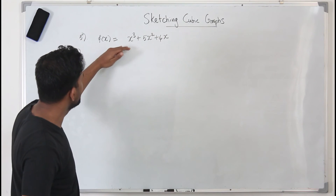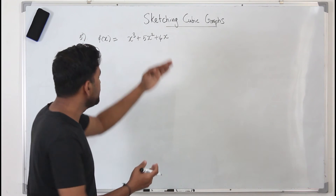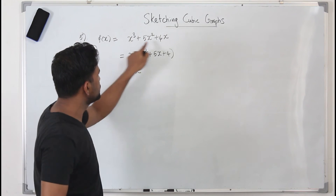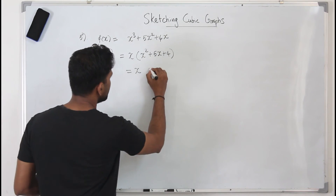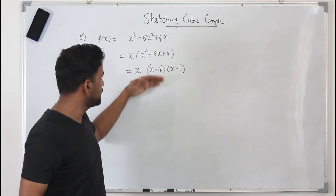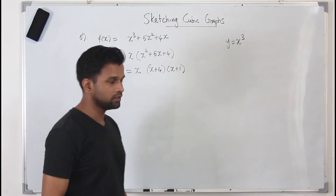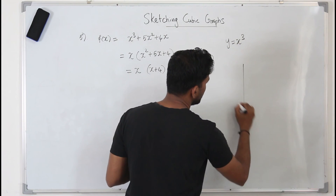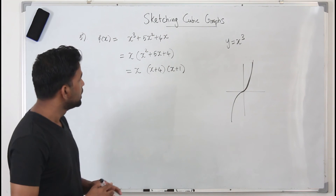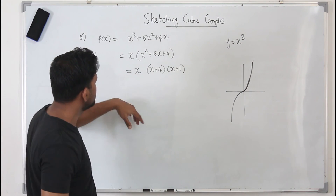Example 5: f(x) = x³ + 5x² + 4x. There's no constant term, so factor out x: x(x² + 5x + 4). Factorize the quadratic using the product-sum method: x(x+4)(x+1). Now the function is in factorized form and you can follow the same steps to sketch the graph. If instead you have simply y = x³, the coefficient of x³ is positive and all three roots are zero, so the graph only touches the origin — that single point is both the x- and y-intercept.